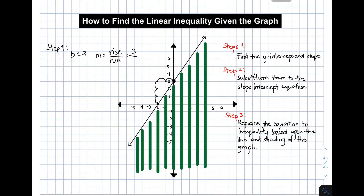So we have 3 over 2. To find your slope given these points, I located another point for the rise over run. From this point: 1, 2, 3 — and for your run, you count units from left to right: 1 and 2. Therefore, the value of our slope is simply 3 over 2.